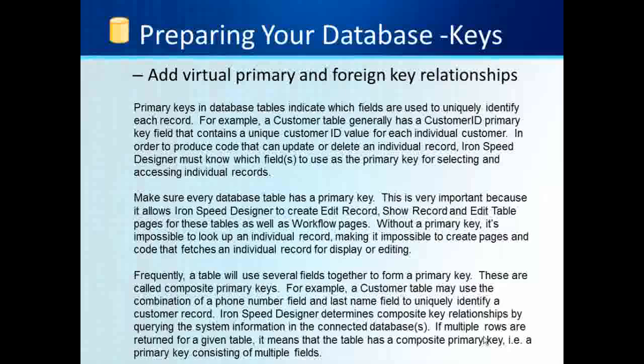Make sure every database table has a primary key. This is very important because it allows IronSpeed Designer to create edit records, show records, and edit table pages for these tables as well as workflow pages. Without a primary key, it's impossible to look up an individual record, making it impossible to create pages and code that fetch an individual record for display or editing. Frequently, a table will use several fields together to form a primary key — for instance, a customer ID and a date field, or customer ID and a numeric field. These are called composite primary keys. For example, a customer table may use the combination of a phone number and the last name to uniquely identify a customer record.